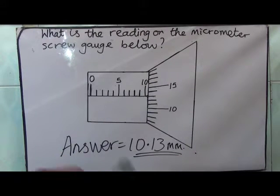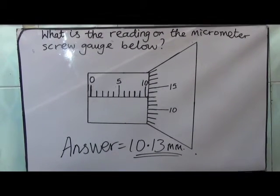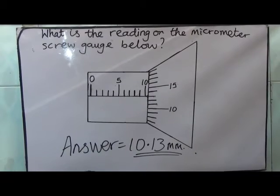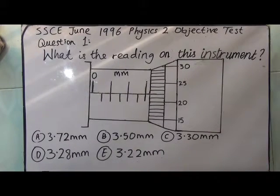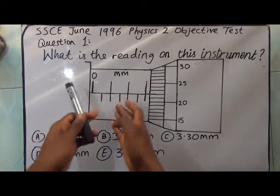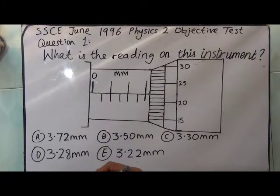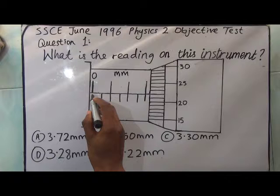That's all. Let's answer an SSCE question on this topic. This is an SSCE past question on reading the micrometer screw gauge. It says, what is the reading on this instrument? This is the main scale, the Vernier scale as well.